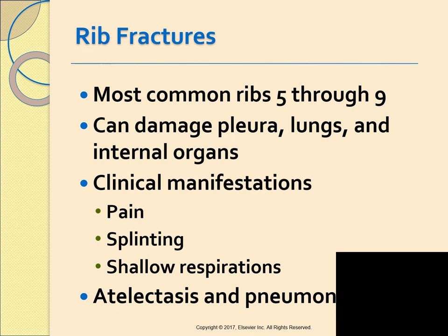Rib fractures are the most common type of chest injury from blunt trauma. Ribs five through nine are most commonly fractured because they are the least protected by chest muscles. If a fractured rib is splintered or displaced, it can damage the pleura, lungs, and other internal organs. Manifestations include pain at the injury site — especially during inspiration and coughing. Patients often splint the affected area and take shallow breaths. Atelectasis and pneumonia commonly develop because of decreased chest wall movement and retained secretions.